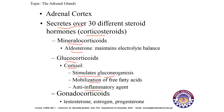The third type of corticosteroids are gonadocorticoids, secreted by the inner zone of the adrenal cortex — the zona reticularis. The examples of these hormones are testosterone, estrogen, and progesterone, which are also known as the sex hormones.